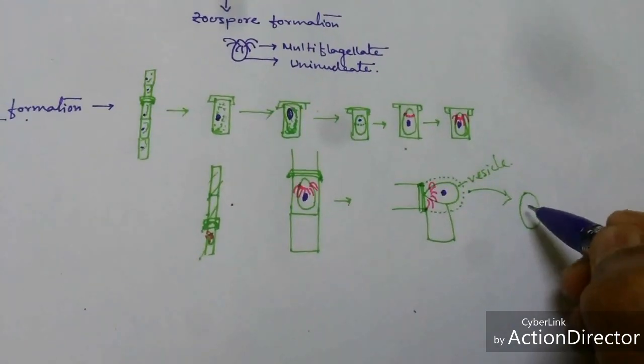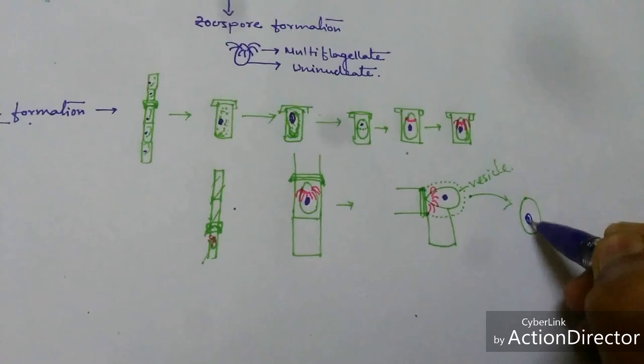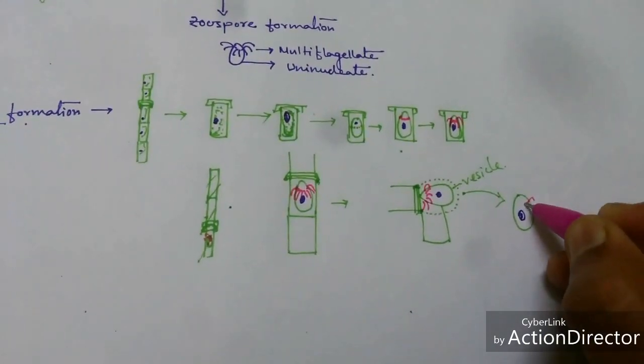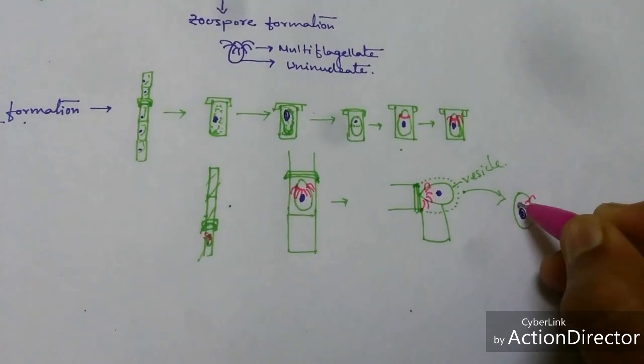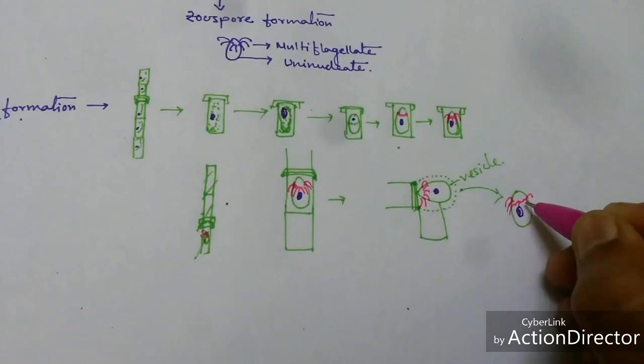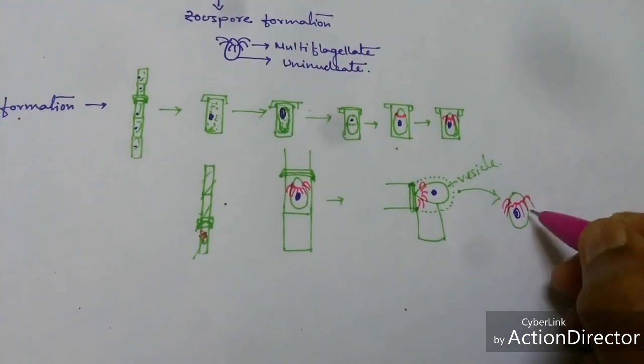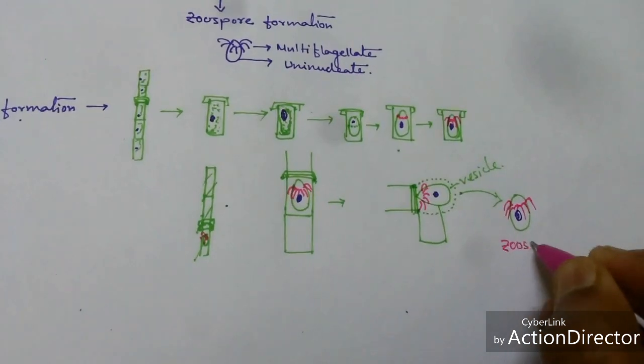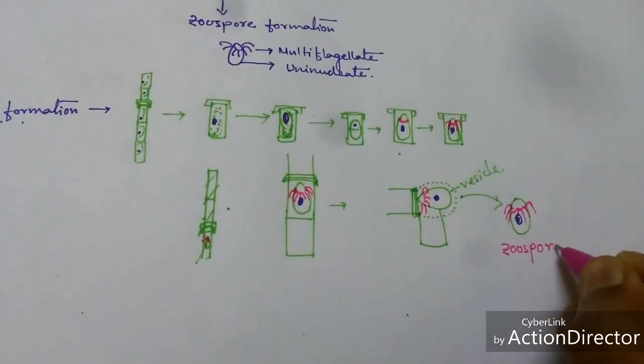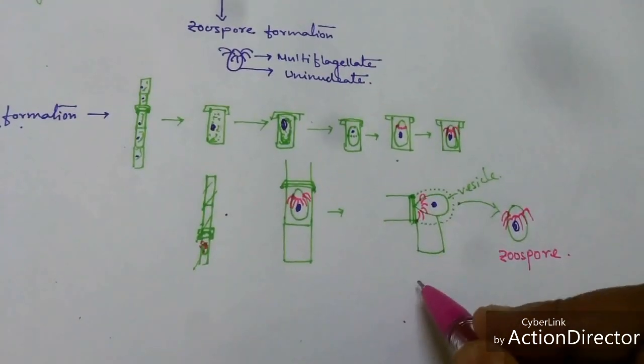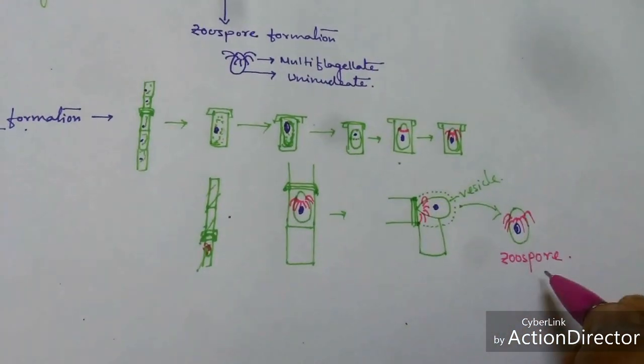So the new zoospores are formed. It is an uninucleate and multiflagellate zoospore. In Oedogonium, this type of zoospore is formed, and from a thallus a single zoospore is formed.